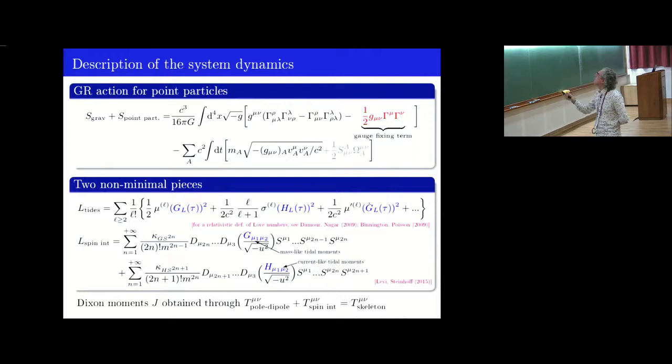So, in the Lagrangian approach, we take, more specifically, this action. So, this is the Einstein-Hilbert action with a gauge-fixing term. Here, you have the point-particle part, including, possibly, the spins. But I will not consider spins in this part later. I will simplify the discussion. However, I give here two examples of non-minimal pieces. This is the tidal part of the Lagrangian, for instance. You see, this is quadratic in terms of tidal multipole moments, here of mass and current types. Those mu, sigma are related to the relativistic love numbers. You can do the same for the spin interactions. You have derivatives of tidal moments, quadrupole actually here, and this couples to a certain number of spins. You have deformability coefficients here.